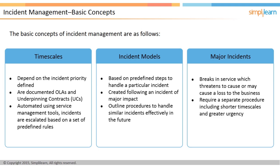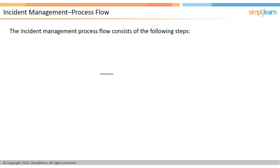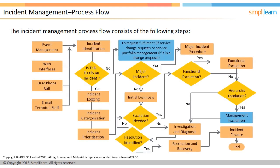The incident management process flow is described as follows. Identification: the incident is detected or reported through event management. Alternatively, the impacted user registers it through a web interface, over a phone call, or through email. Registration: the incident is logged and a record is created. Incident categorization: the registered incident is categorized according to type, status, impact, urgency, or SLA. If the issue reported is not an incident but a request from the user or a change proposal, it is handled according to the request fulfillment process.